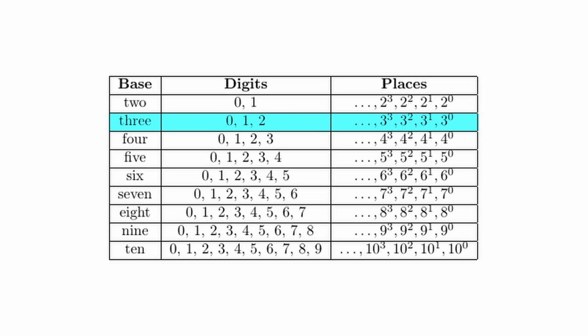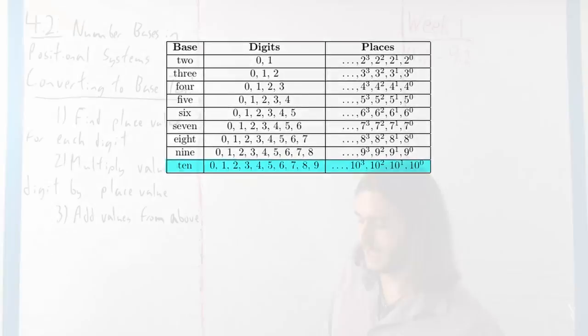Then in base four, zero, one, two, three. Base five up to four with powers of five. Six is up to five with powers of six, seven up to six with powers of seven, eight, nine, and our system at ten.